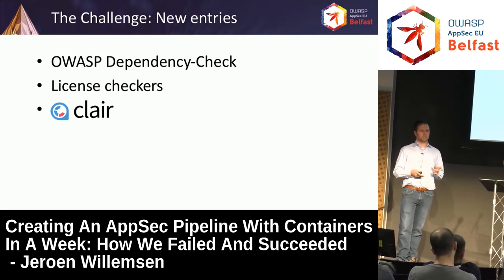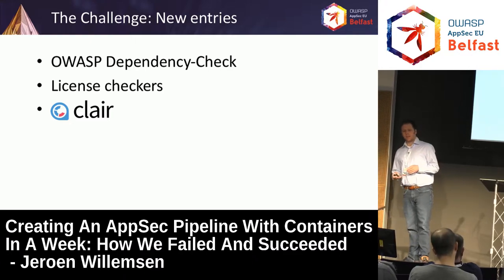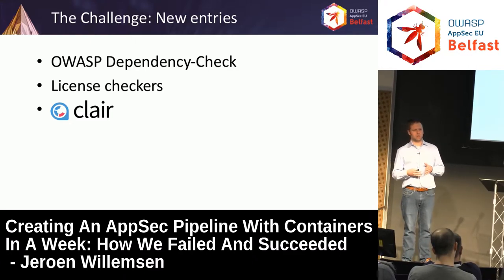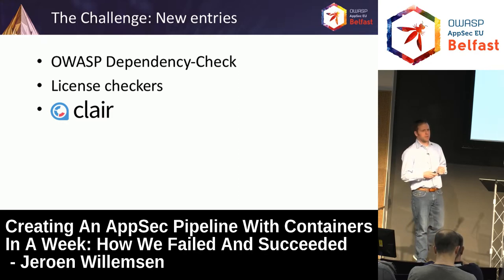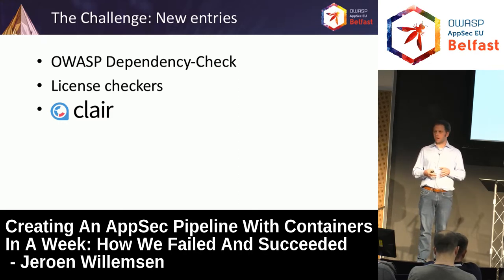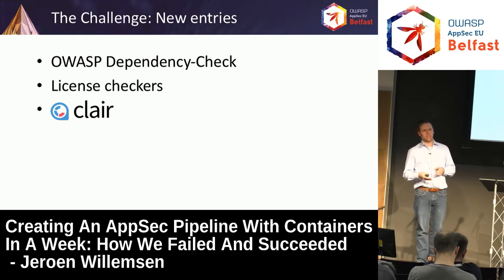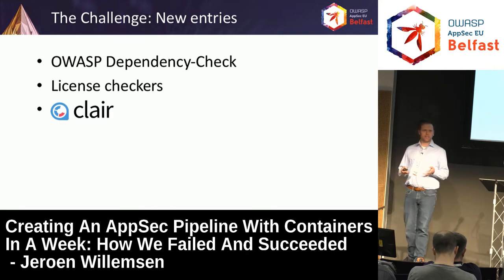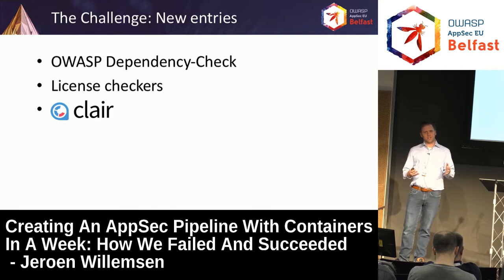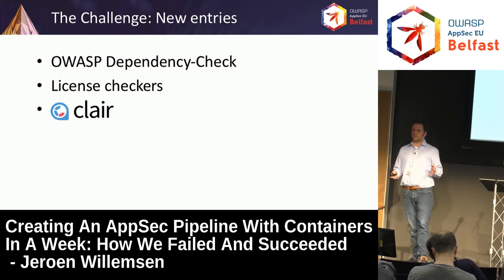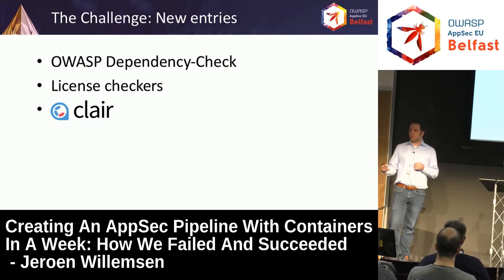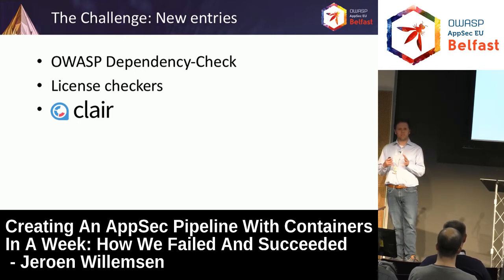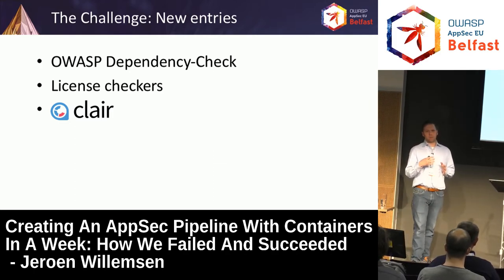Then we started doing something with Docker security. We used Clair for that. For those who don't know, Clair is an inspector tool — part of a larger commercial suite but open sourced. It uses vulnerability databases to verify the layers within a Docker container to see if known vulnerabilities can be linked to them and then reports on that. It's relatively easy: when you create a container, you offer it to Clair, it dissects the layers and tells you what might be wrong. Of course, a layer on top might mitigate a vulnerability, so you get some noise, but you get basic insight.